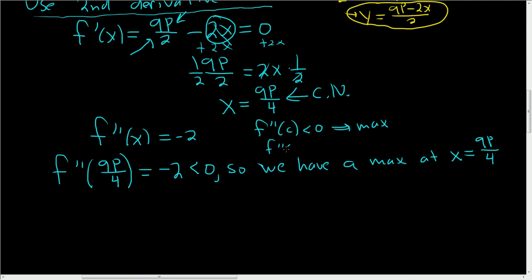If the second derivative is greater than 0 at a critical number, you have a min. So let's finish. We have a max at this number. We know that y is equal to 9p minus 2x over 2. So we have x - that's one of the answers. Now we just need to find y.